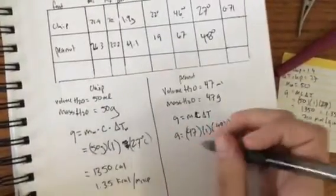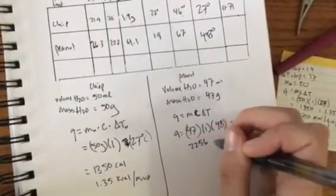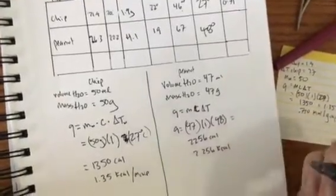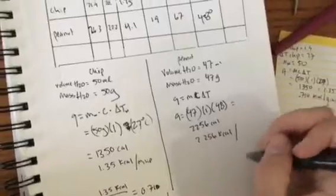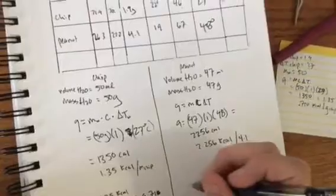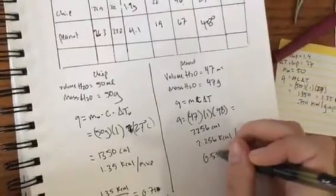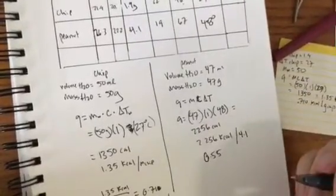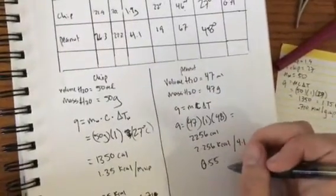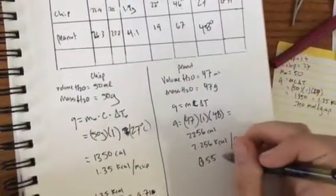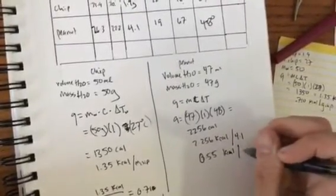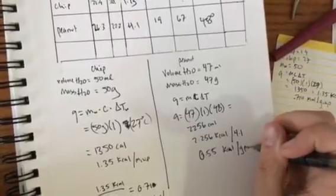I'm gonna multiply this out, I end up with 2256 calories, or 2.256 kilocalories. Again I'm gonna divide by the mass of the peanut, the change in mass, so that was 4.1, and you end up with 0.55 kilocalories per gram. So 0.55 kilocalories of energy were released for every gram of peanut that was burned.